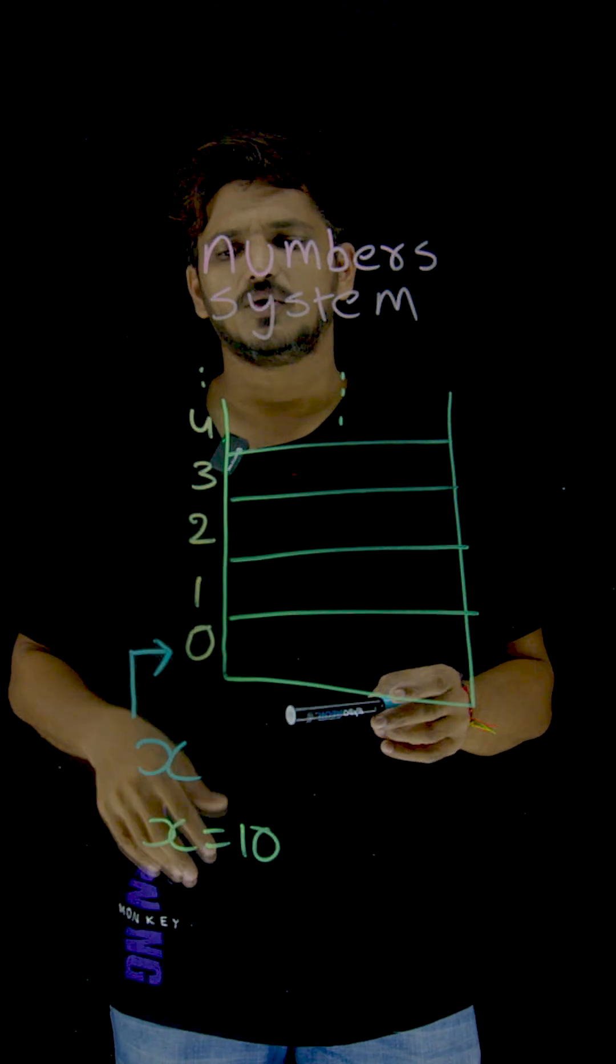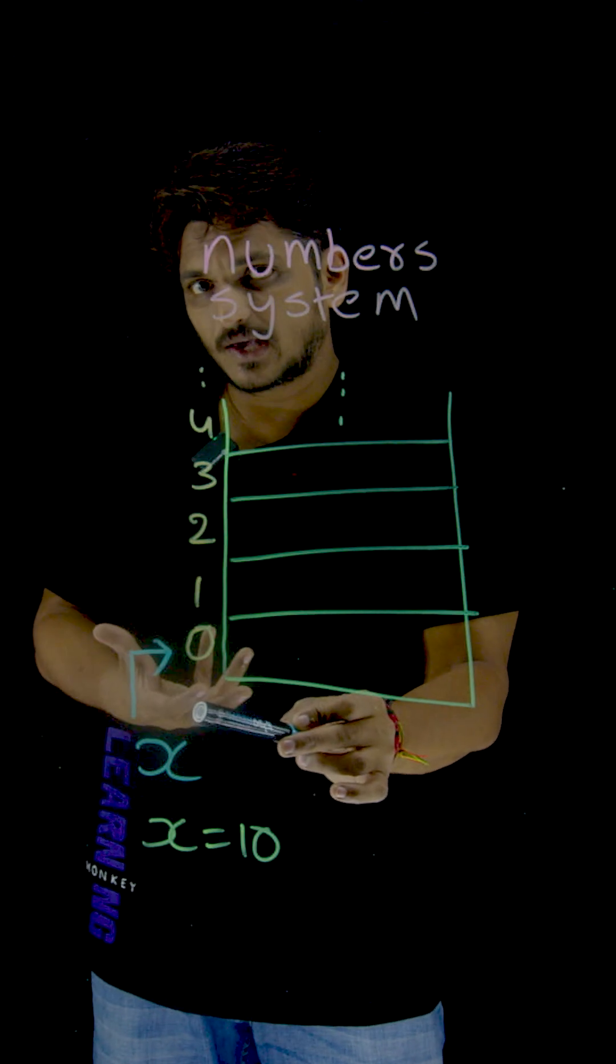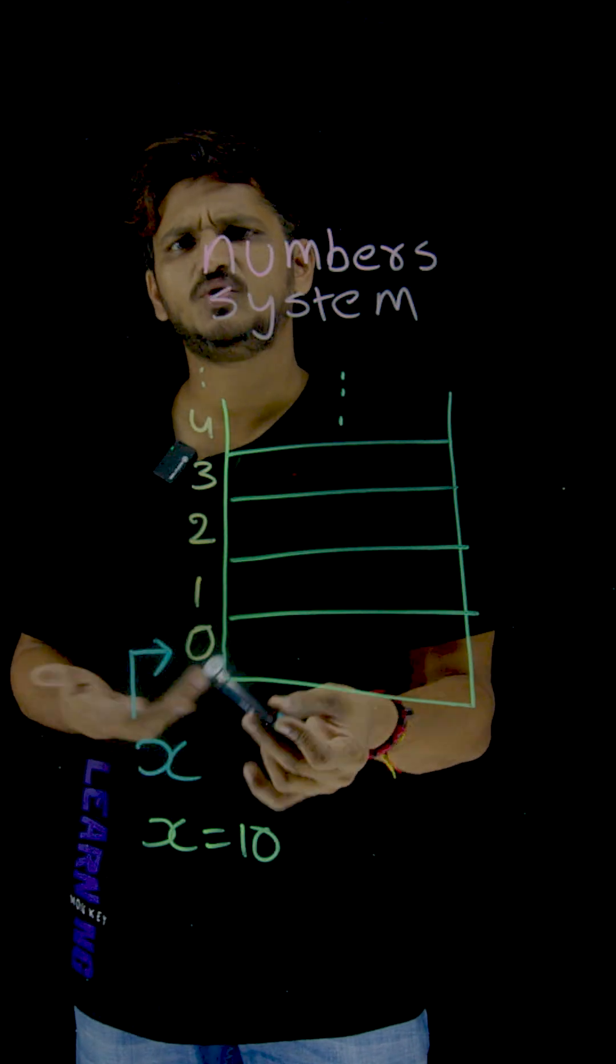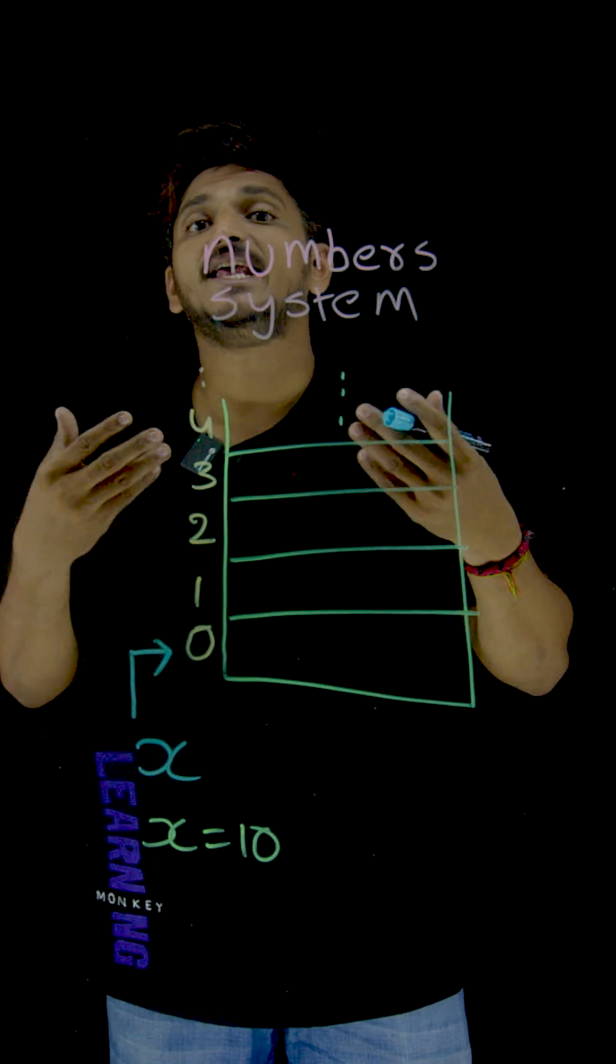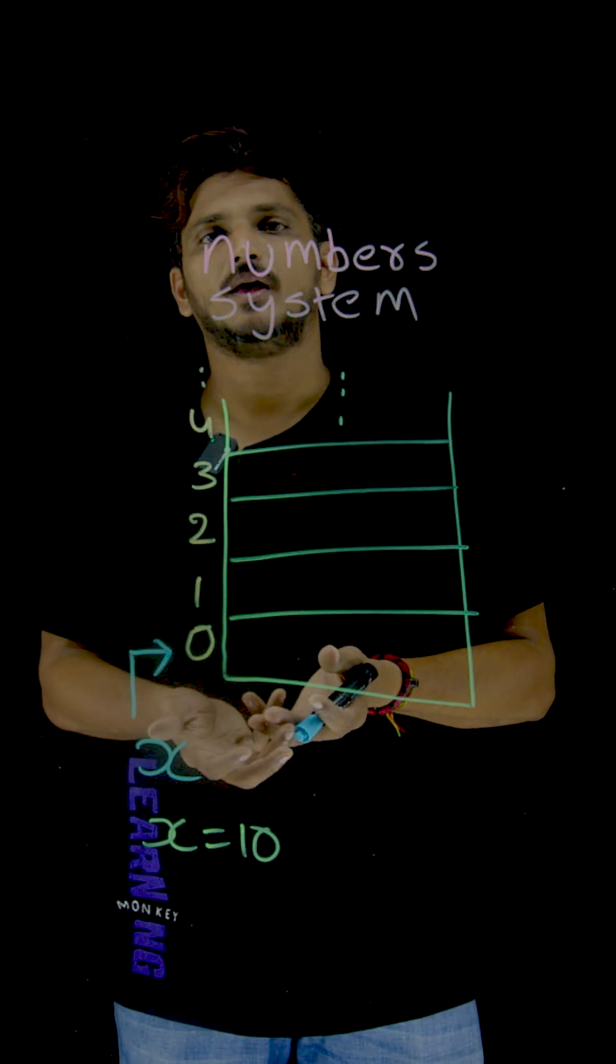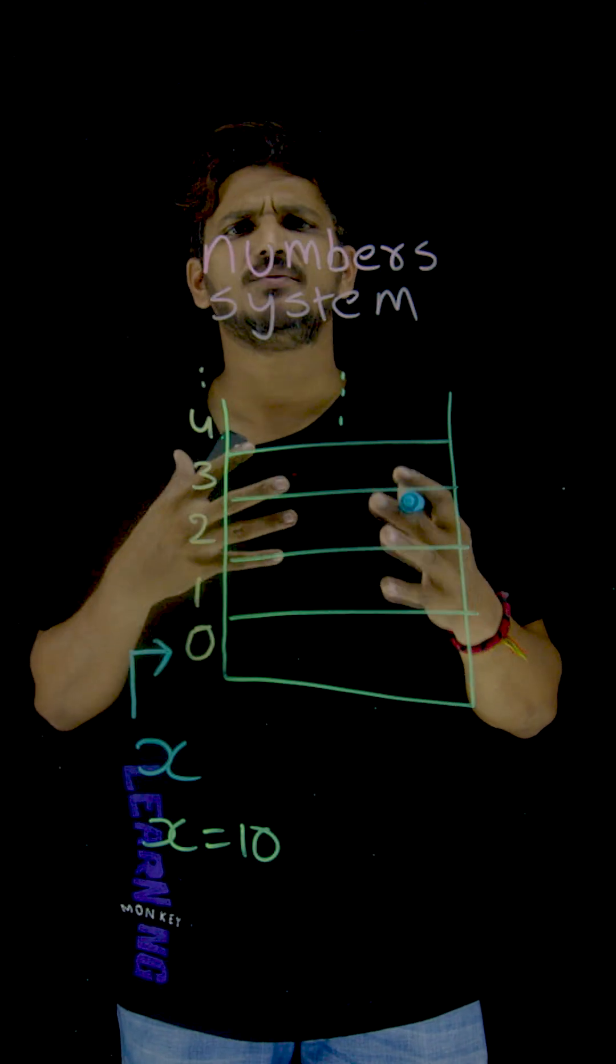So now, whenever you write X in your programming language, is it compulsory to write X? No. You take it as Y. Any name, you take your name, it's a variable name. You take Pi, it's a variable name. Any name you can write.